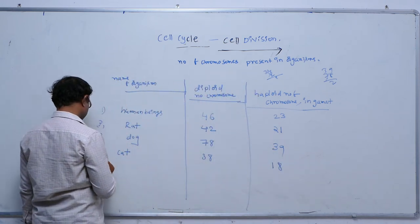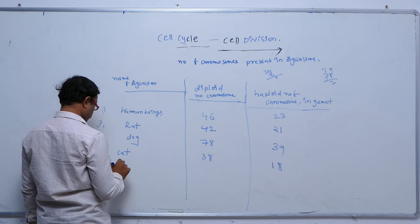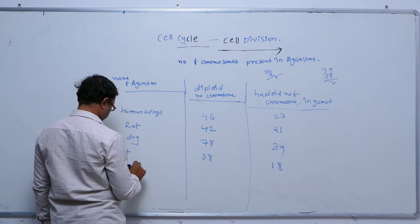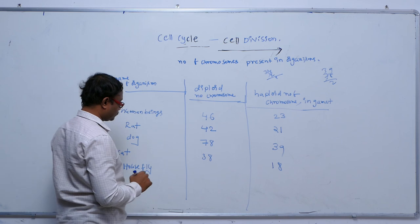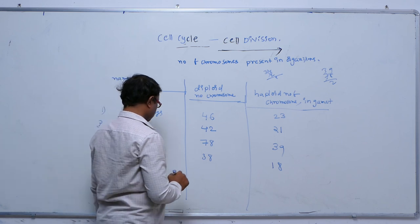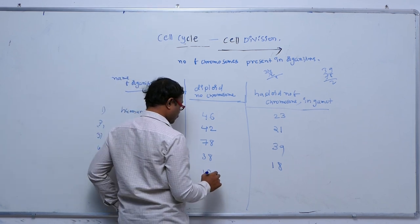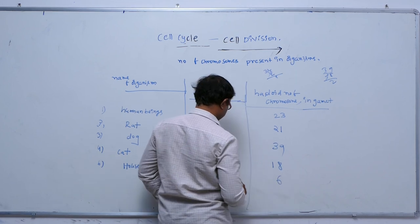After that, housefly — the diploid number of chromosomes is 12, and the haploid number of chromosomes is known as 6.